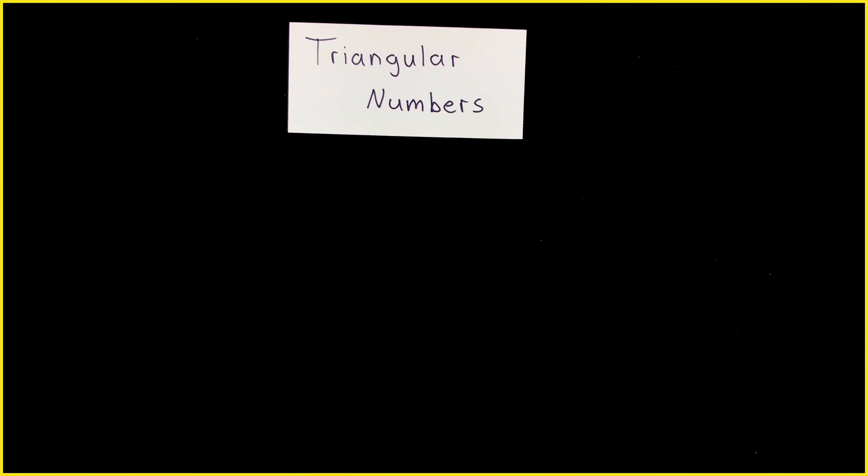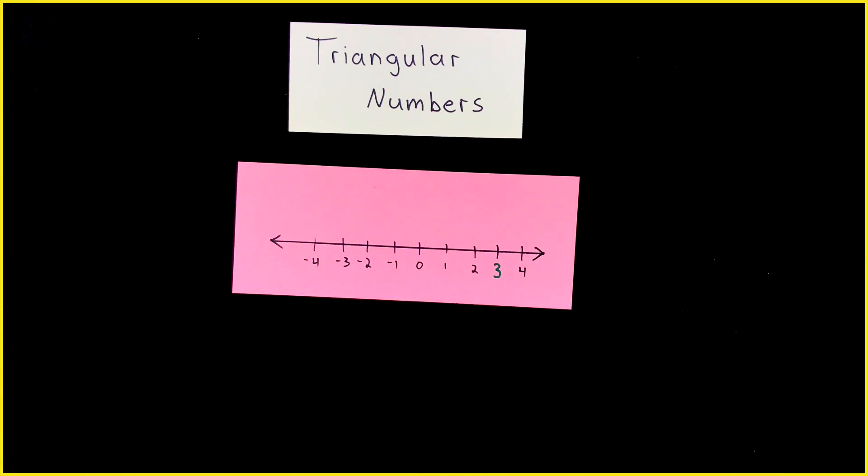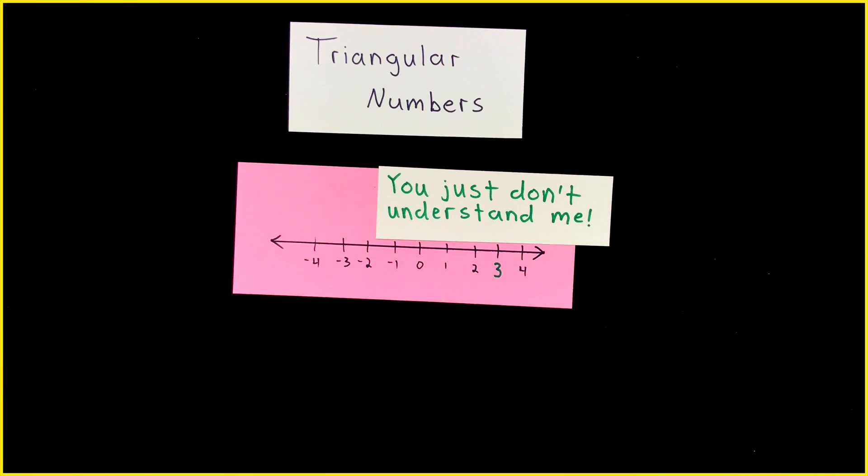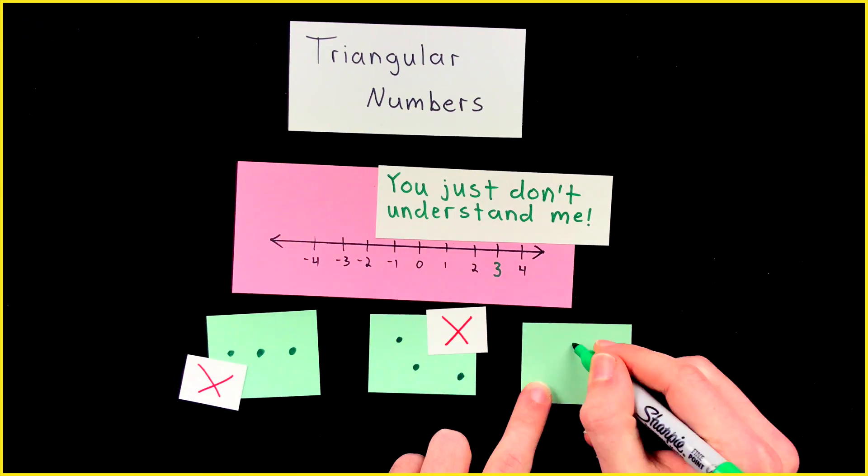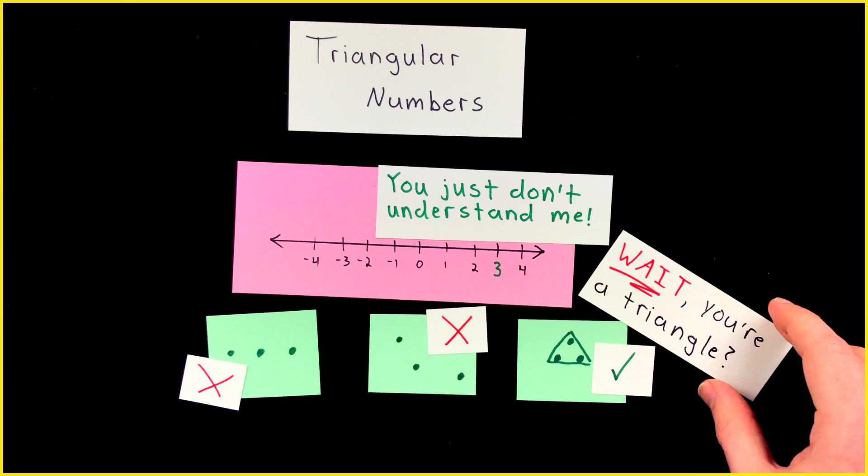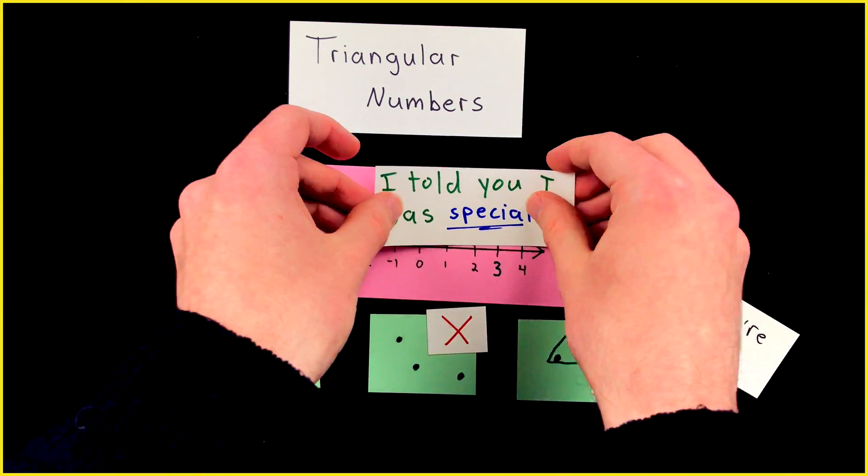Triangular numbers. These are numbers that aren't content to just be another dot on a number line. No way. You just don't understand me. They might cry from the number line wishing that you'd spend an inordinate amount of your time fiddling with them on a piece of paper, so maybe you'd stumble upon the fact that they have something vaguely to do with triangles.